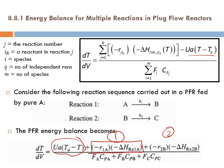The denominator is the summation over the species. We have three species — A, B, and C — so it is F_A times C_pA plus F_B times C_pB plus F_C times C_pC. Most importantly, it is the product that is being summed. Do not write minus r_1A plus minus r_2B multiplied by minus delta H. The products are summed: for term one it is r_1A with delta H reaction 1A, and for term two it is r_2B with delta H reaction 2B. We'll apply this in an example in the second segment of this lecture.